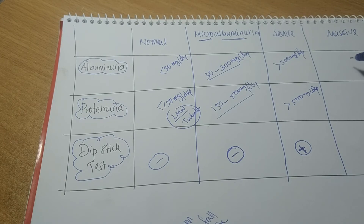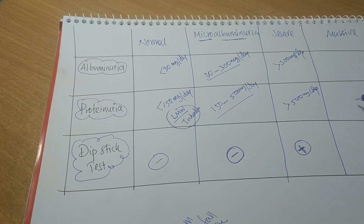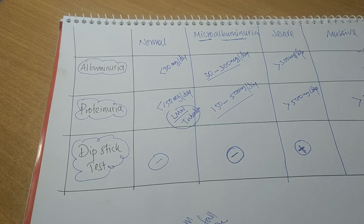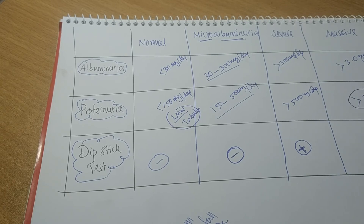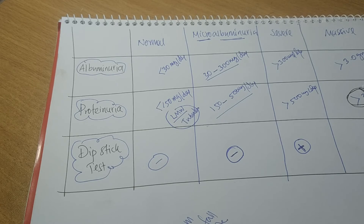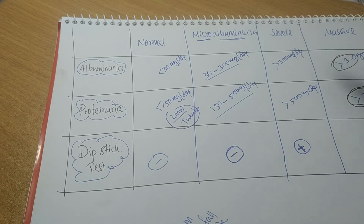Now the last point, which can be very confusing: massive proteinuria and massive albuminuria. Massive proteinuria is when total proteinuria is more than 3.5 g per day, and massive albuminuria is when total albumin is more than 3 g per day. At this stage, the dipstick test will be 4+. These two figures can sometimes be confusing — remember that when using the term proteinuria, massive proteinuria is more than 3.5 g per day.